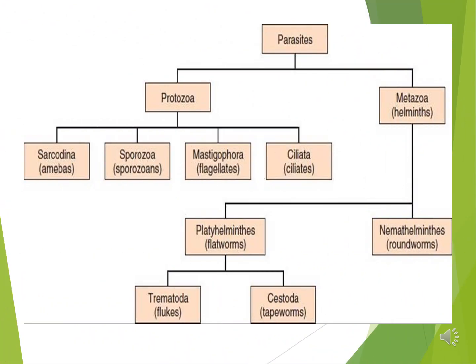Parasites are composed of protozoa and metazoa. Under protozoa, there are four classes. First is Sarcodina, under which comes the amoeba. Second is Sporozoa, under which come the sporozoites and other related parasites. Third is Mastigophora, which contains flagellate parasites. And the fourth is Ciliata, where parasites have cilia for movement.